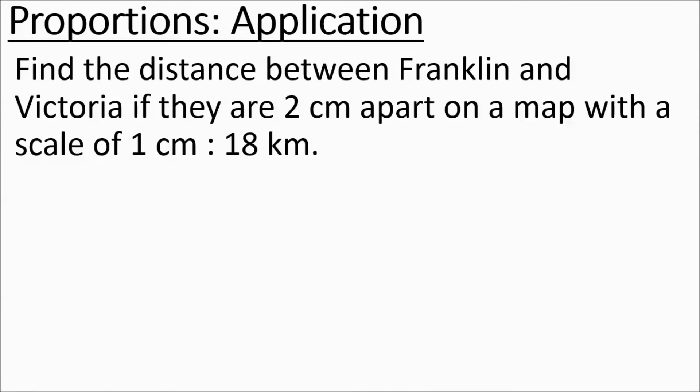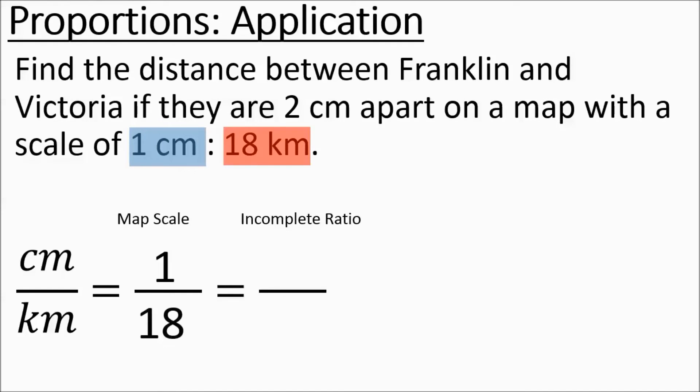Find the distance between Franklin and Victoria if they are 2 centimeters apart on a map with a scale of 1 centimeters to 18 kilometers. We're going to set up centimeters to kilometers. And we've got our map scale and then we've got our incomplete ratio. So they're saying on the map, 1 centimeter is 18 kilometers. So for every centimeter on a map's paper, it's really in real life 18 kilometers.